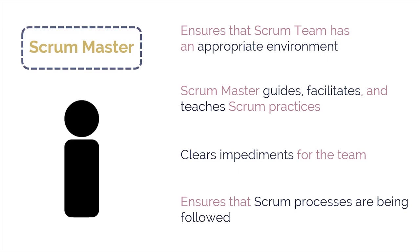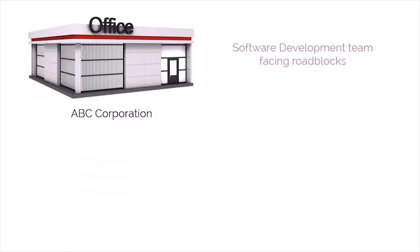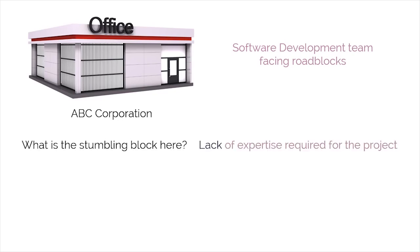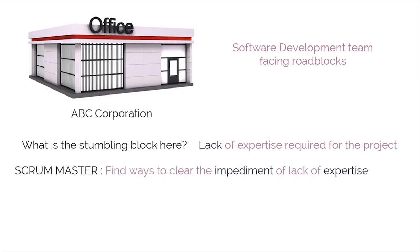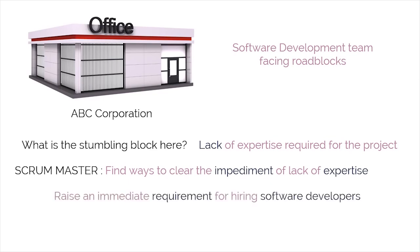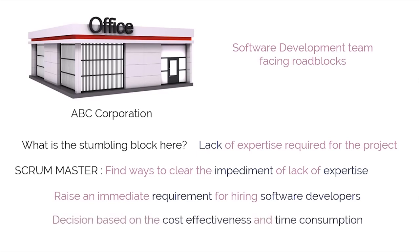Here's an example to clarify. This is ABC Corporation. The software development team at ABC is facing roadblocks lately — they are unable to live up to the set standards of a project in terms of quality. The stumbling block is a lack of expertise required for the project, which in turn leads to delay. This is where the Scrum master pitches in. The Scrum master will focus on finding ways to clear this impediment by either raising an immediate requirement for hiring software developers with the required expertise, or making an arrangement for training the existing staff. The Scrum master will then make a decision based on the cost-effectiveness and time consumption of the action to be taken.